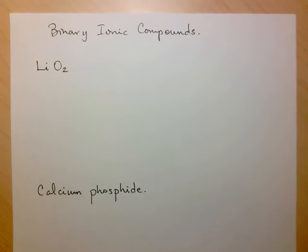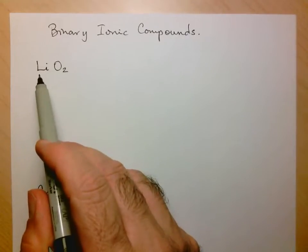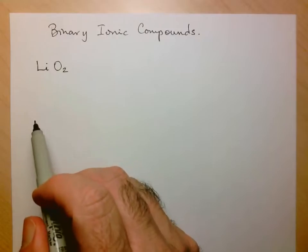Hi folks, we're going to continue our review by looking specifically at binary ionic compounds. These are made up of two types of atoms: one metal cation and one non-metal anion.